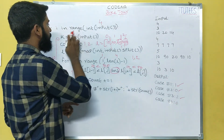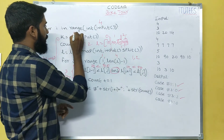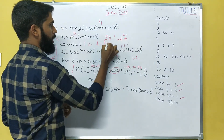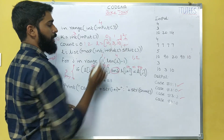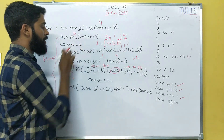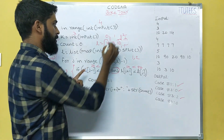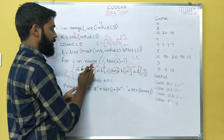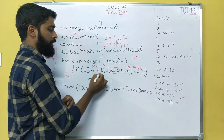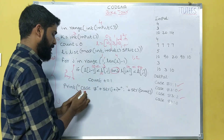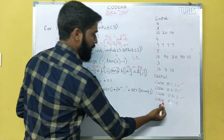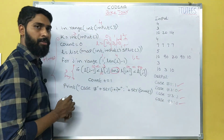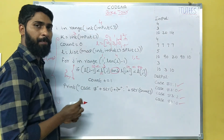In the final iteration, K becomes 3 and L becomes [10, 3, 10]. Count equals 0. Ignoring the first and last, we check L[J] which is 3, and L[J-1] which is 10 — this is false, so we do not increment. The loop ends and we print count as 0. In this way we are going to find the peaks.